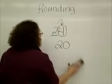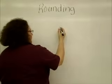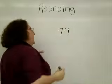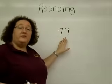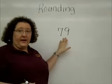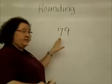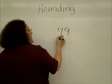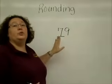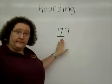Let's take a look at another example. Same idea — we're going to round to the nearest ten. I count my places to find my number: ones, tens. So the seven is the digit that's either going to stay the same or go up by one.